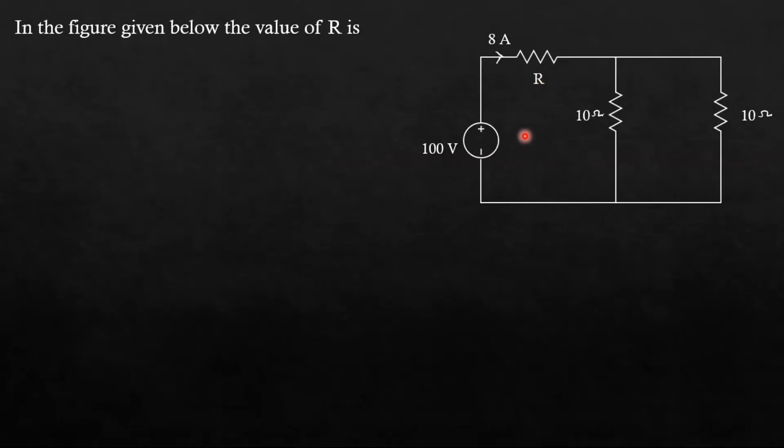In this problem we have a given circuit and we need to find the value of R. Current in this branch is already given to us as 8A. Let us say the current in this branch is I1 and in this branch is I2.